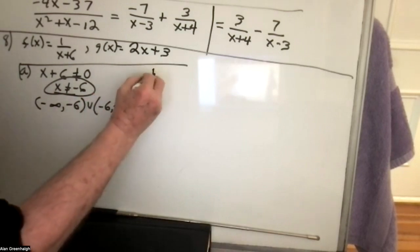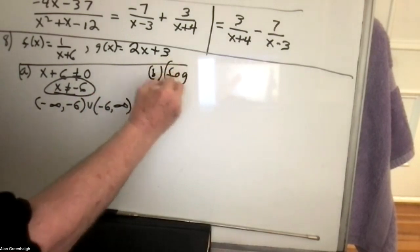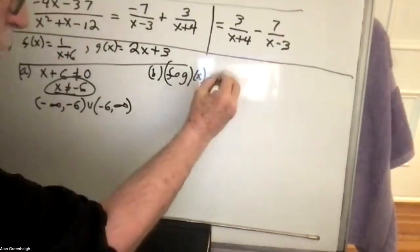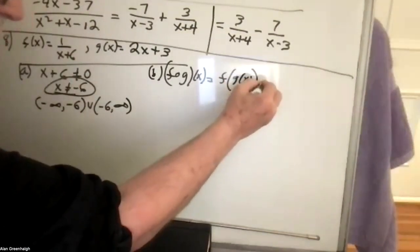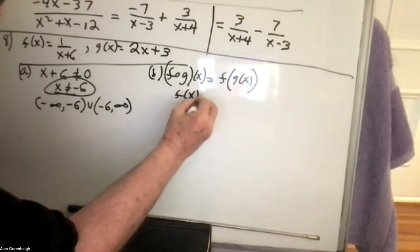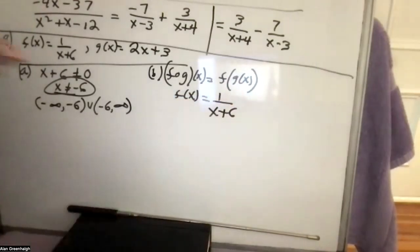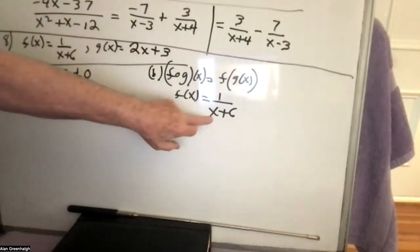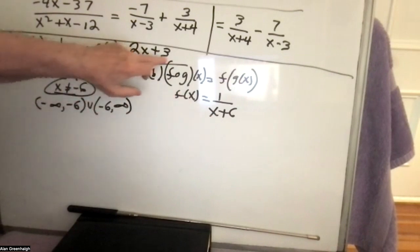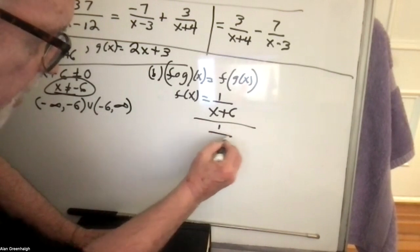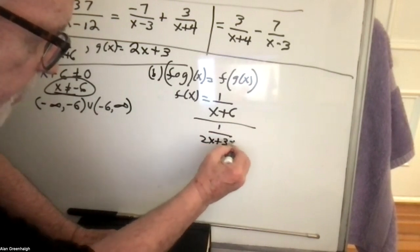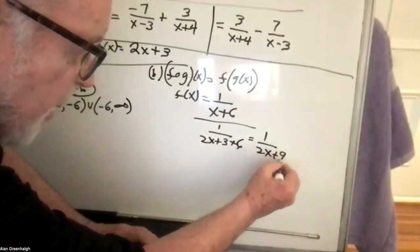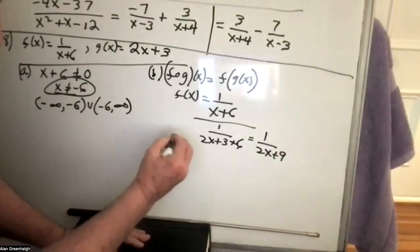Then you were asked to find f of g of x. If f(x) equals 1 over x plus 6, and g(x) was 2x plus 3, wherever you see an x you substitute 2x plus 3. So instead of x you'd have 2x plus 3 plus 6, and simplify to get 1 over 2x plus 9. That was the answer.